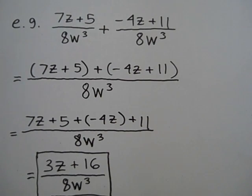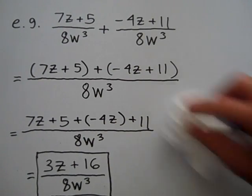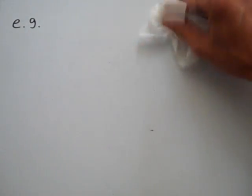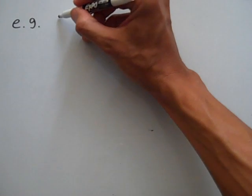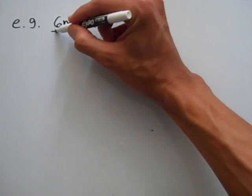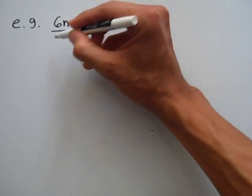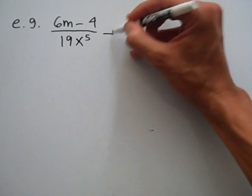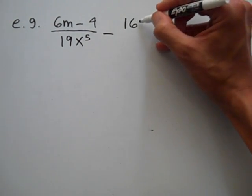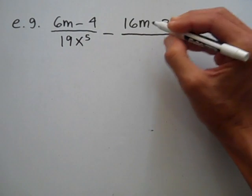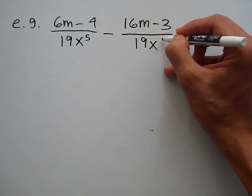I'm going to demonstrate how to subtract two algebraic fractions which have the same denominators. Suppose I've got 6m minus 4 over 19x to the 5th power, minus 16m minus 3 divided by 19x to the 5th power.